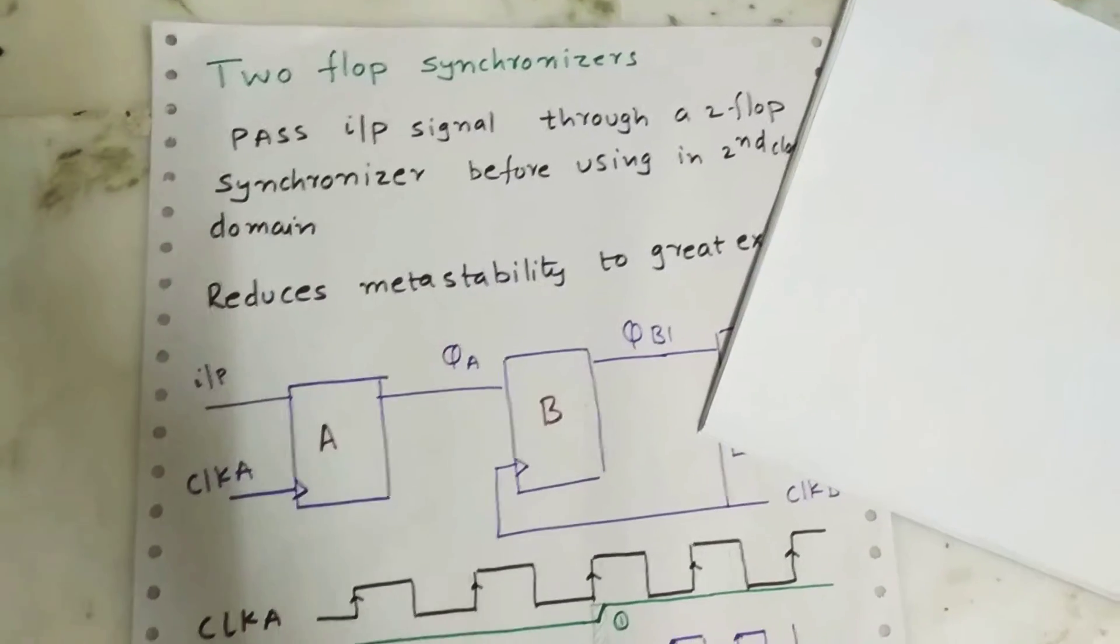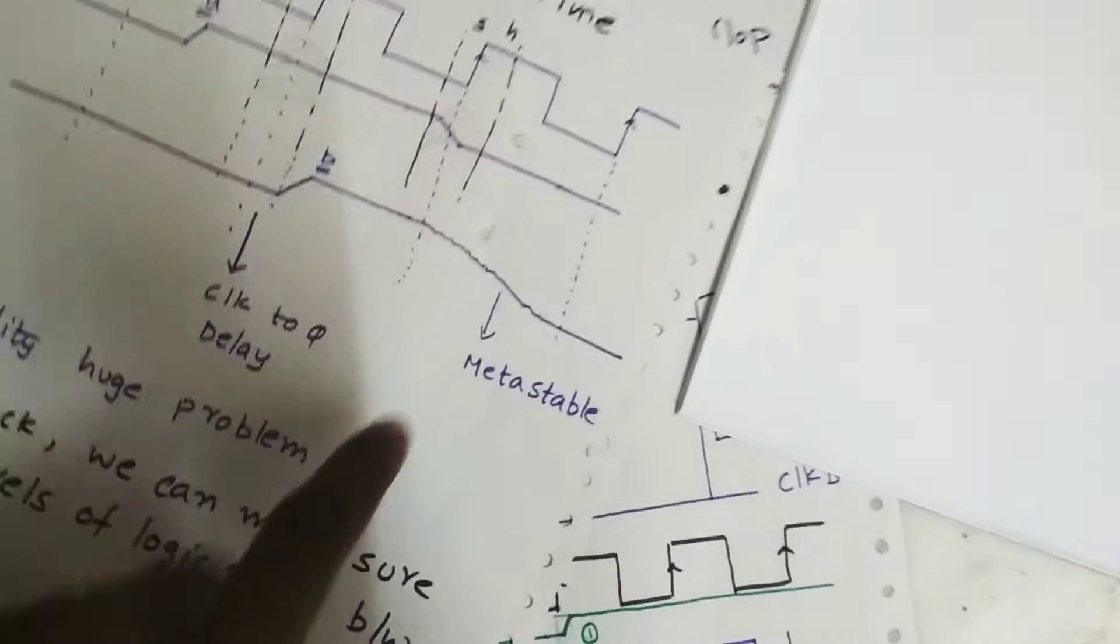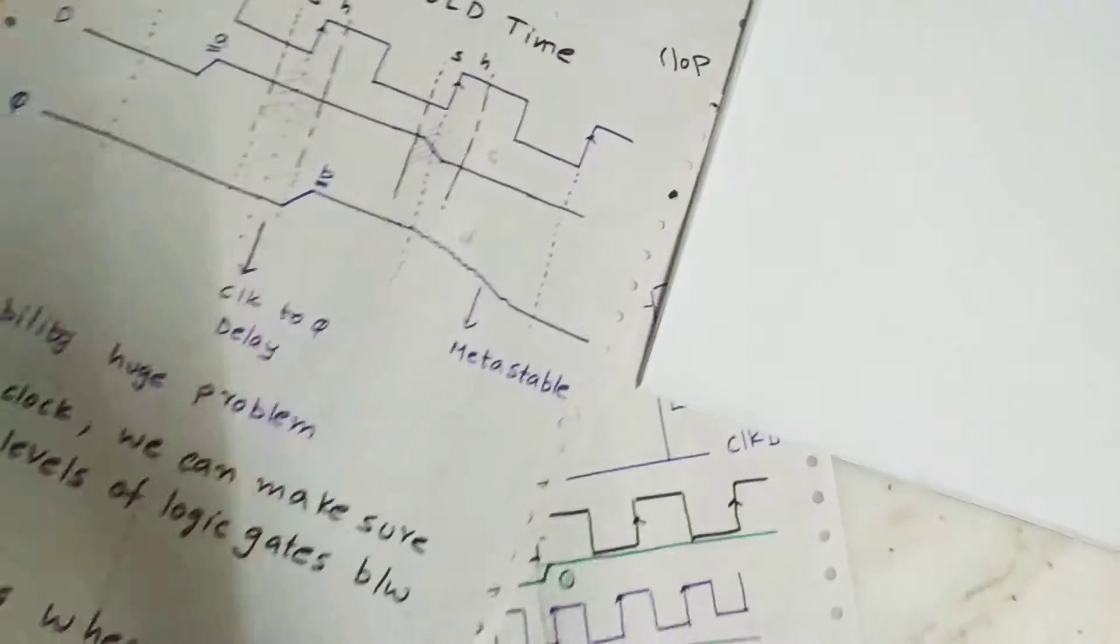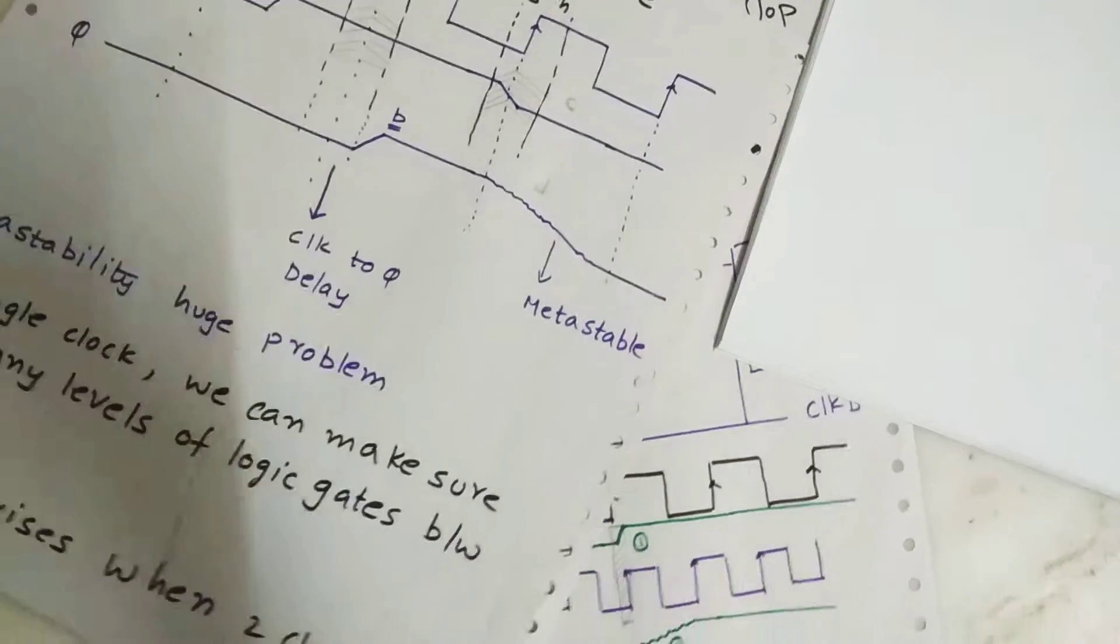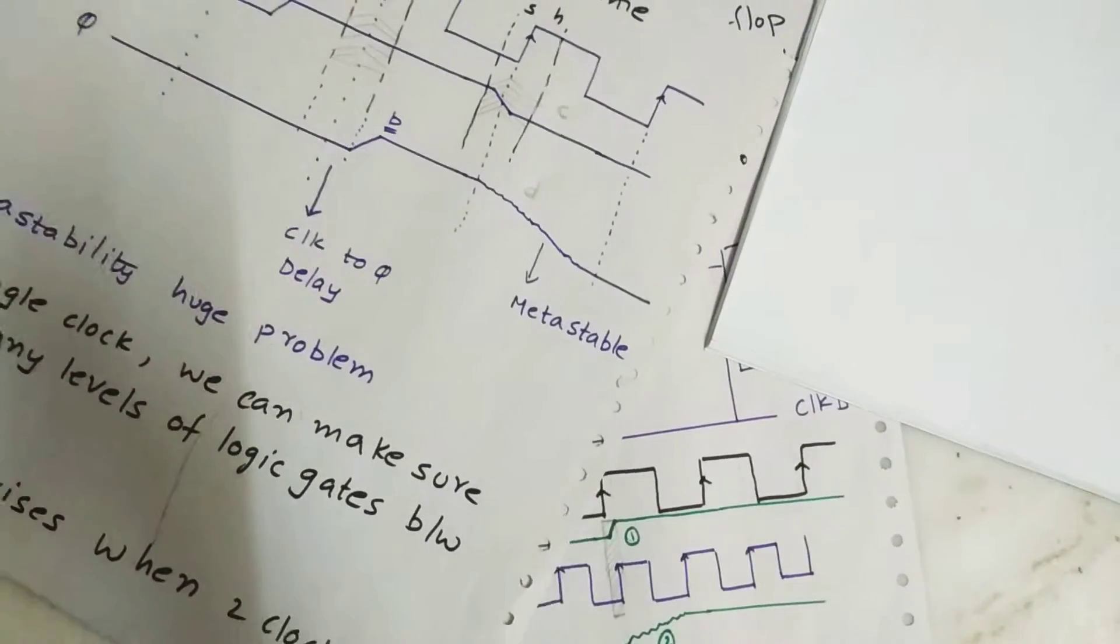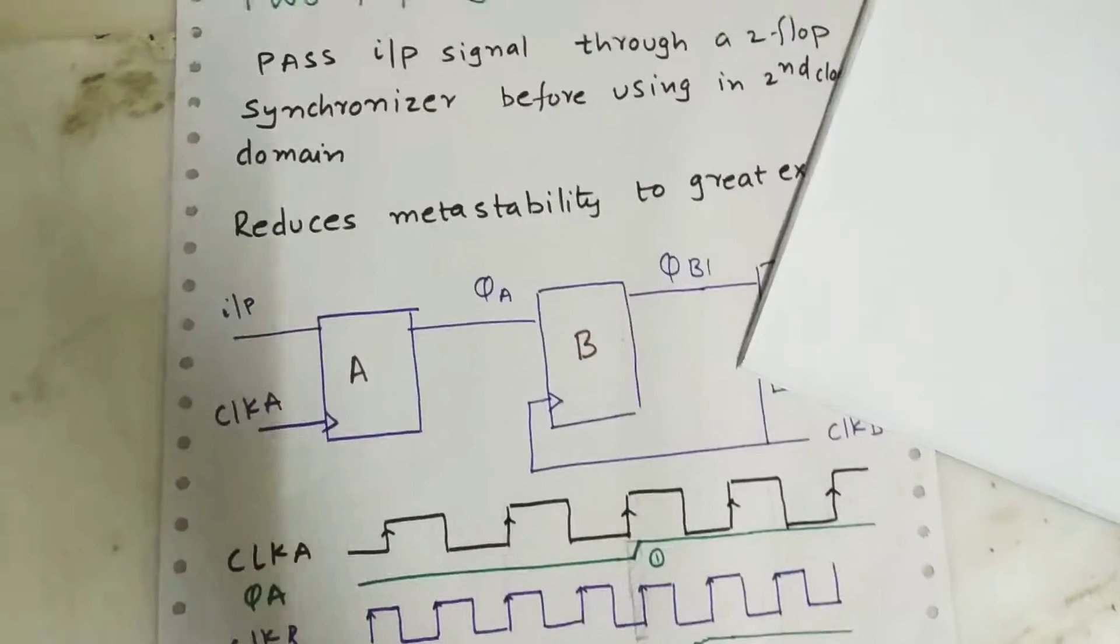Hey guys, today's topic is two-flop synchronizer. Why are we going through this topic? Reason: metastability. Why metastability occurs and where it's prominent? It's prominent where there are more than a single clock domain.